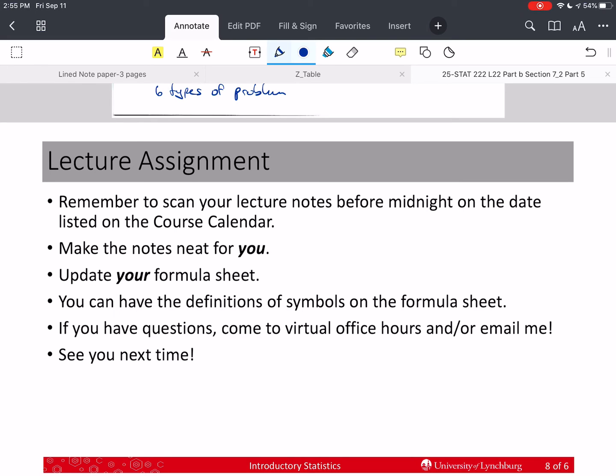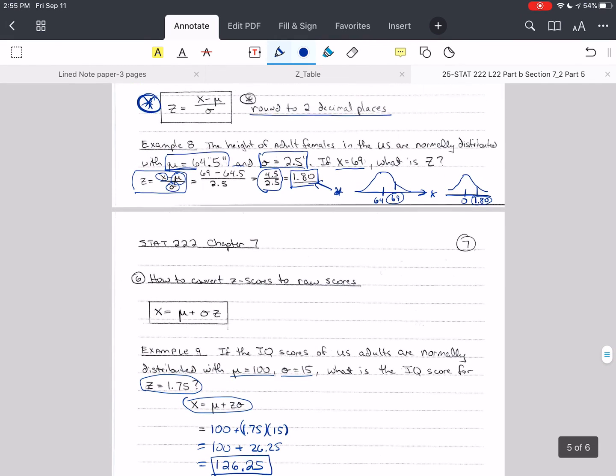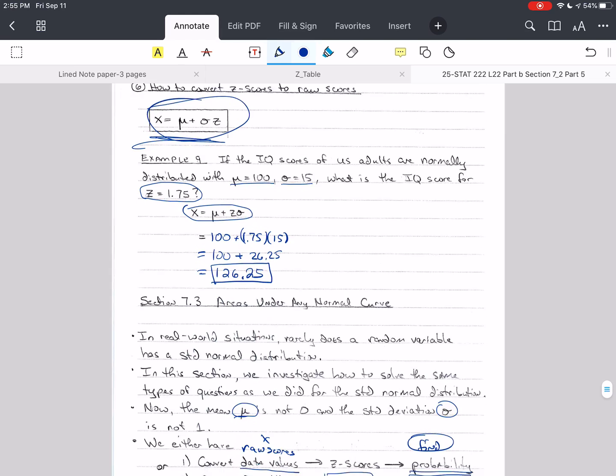Update your formula sheet with your z score and with your value of x, even though it's the same formula here. These are really the same formula here and here. Just this one's solved for z, this is solved for x. That's how we got that.